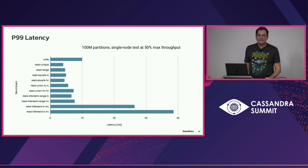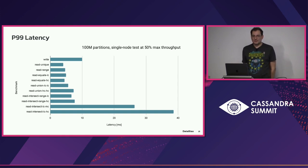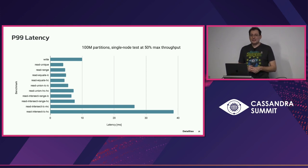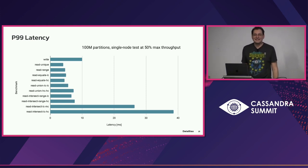Regarding heap memory impact: there is some impact on memory and heap. If you index a lot of rows, some data structures in the indexes are kept in memory to accelerate access so you don't have to touch disk every time. Adding a bit more memory for SAI is recommended, but it should be just a fraction of what is generally needed for memtables — roughly around 10% should probably be enough.